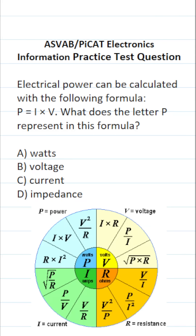This electronics information practice test question for the ASVAB and PyCat says: electrical power can be calculated with the following formula, P equals I times V. What does the letter P represent in this formula? We're given the formula P equals I times V, and we want to know what P represents.